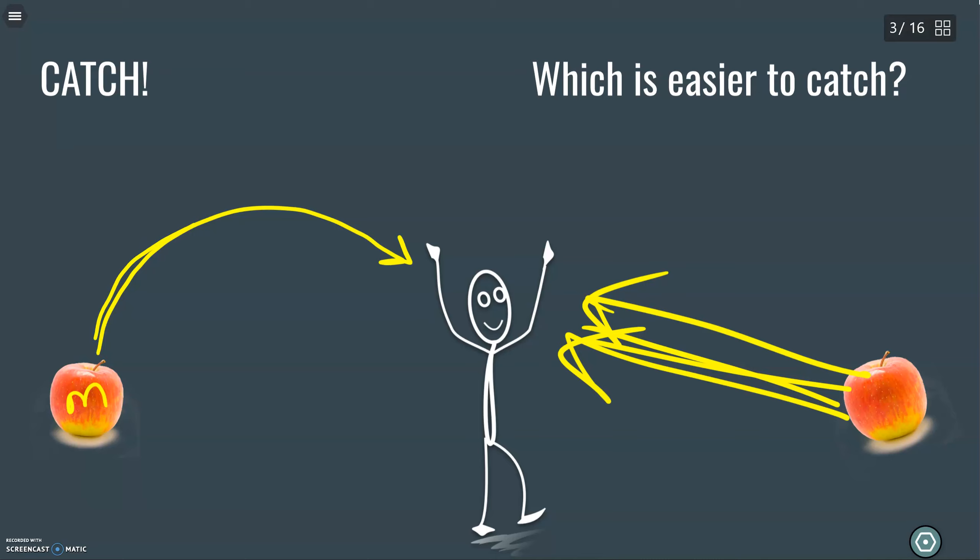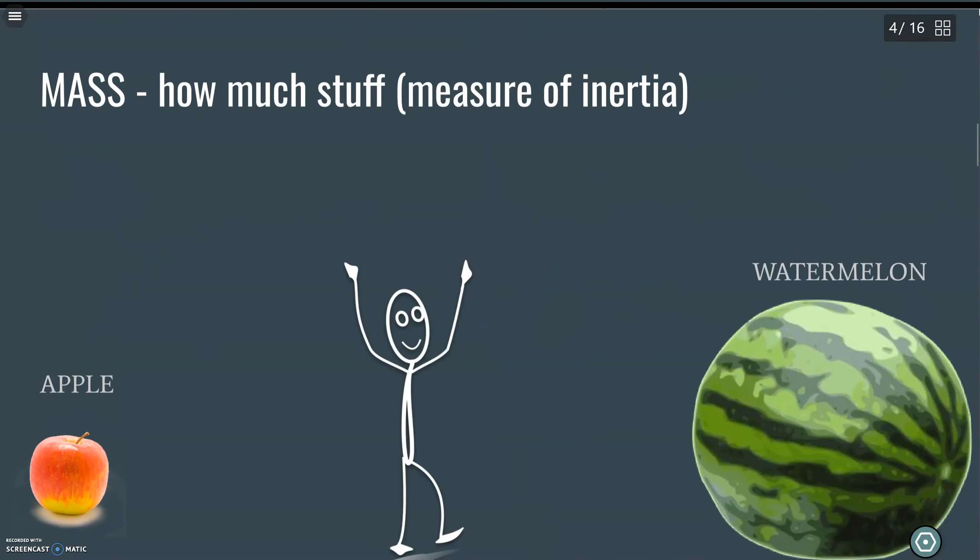Obviously, Mr. J, I want the one that's tossed to me. That's nice and easy. That's easy to catch. So we have two factors that we're dealing with here.